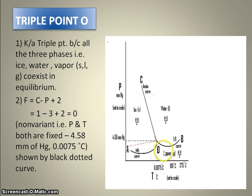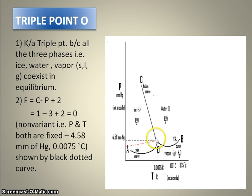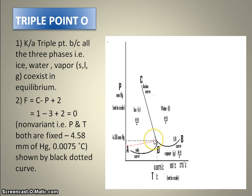One thing to notice about the triple point is that the temperature at the triple point is 0.0075°C, and the pressure at the triple point is 4.58 mm of mercury. These two values are fixed and cannot be changed; otherwise, all three phases will not be found at equilibrium.